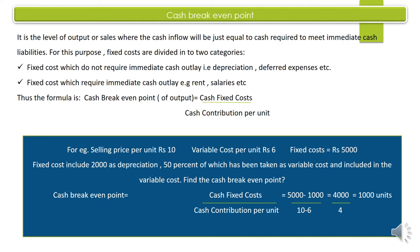Cash break-even point वो level of output या sales है जहाँ cash flow just equal होती है उस amount से जो immediate cash liabilities pay off करने के लिए चाहिए। Formula: Cash Fixed Cost / Cash Contribution per unit। Fixed cost की दो categories हैं: पहली — जहाँ immediate cash outlay की ज़रूरत नहीं होती, जैसे depreciation, deferred expenses; दूसरी — जहाँ immediate cash outlay की ज़रूरत होती है, जैसे rent, salaries। Cash break-even point के लिए सिर्फ second category use होती है।